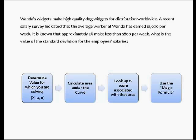We're then going to calculate the area under the curve using the power of 50% above and 50% below the mean. We're then going to delve into the guts of the normal distribution table to locate the area associated with a given z-score. And then we are going to apply the magic formula to solve for this unknown value of a standard deviation.